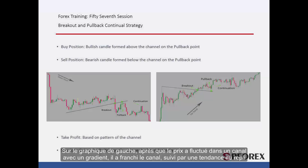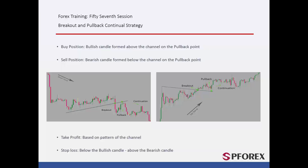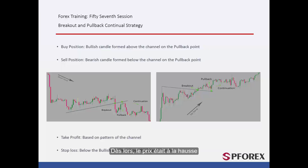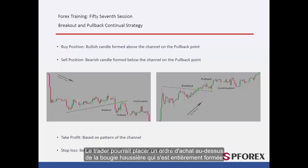On the left graph, after the price fluctuated in a gradient channel, it has broken the channel followed by a pullback trend. Eventually, a reversal candlestick has formed near the edge of the channel on the pullback point, hence price increased towards the top. A trader could place a buy order over the bullish candle that has formed completely.